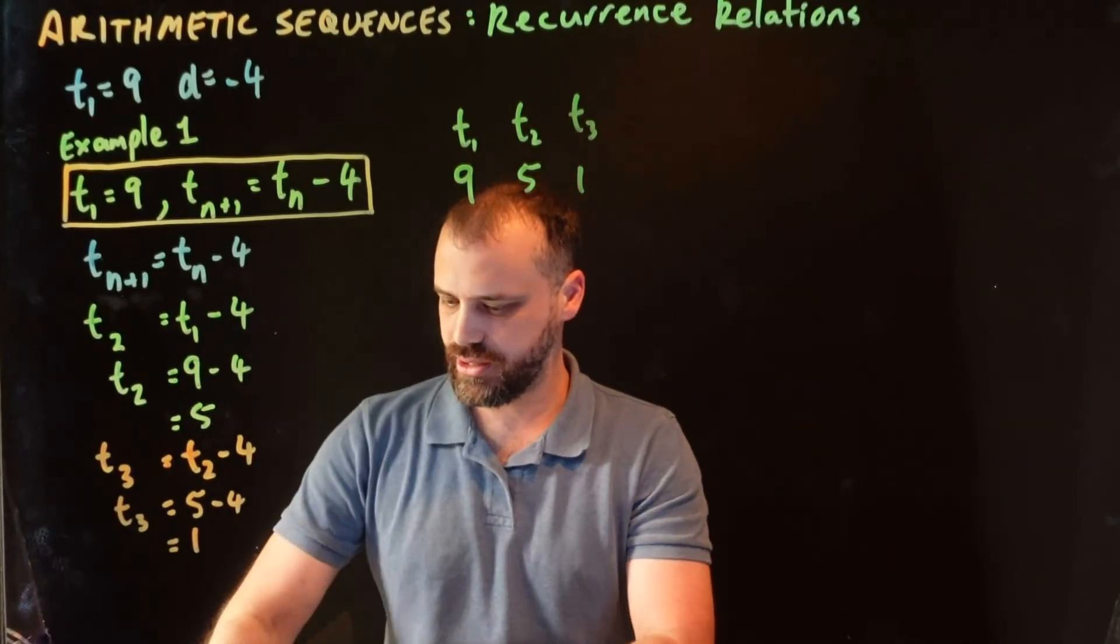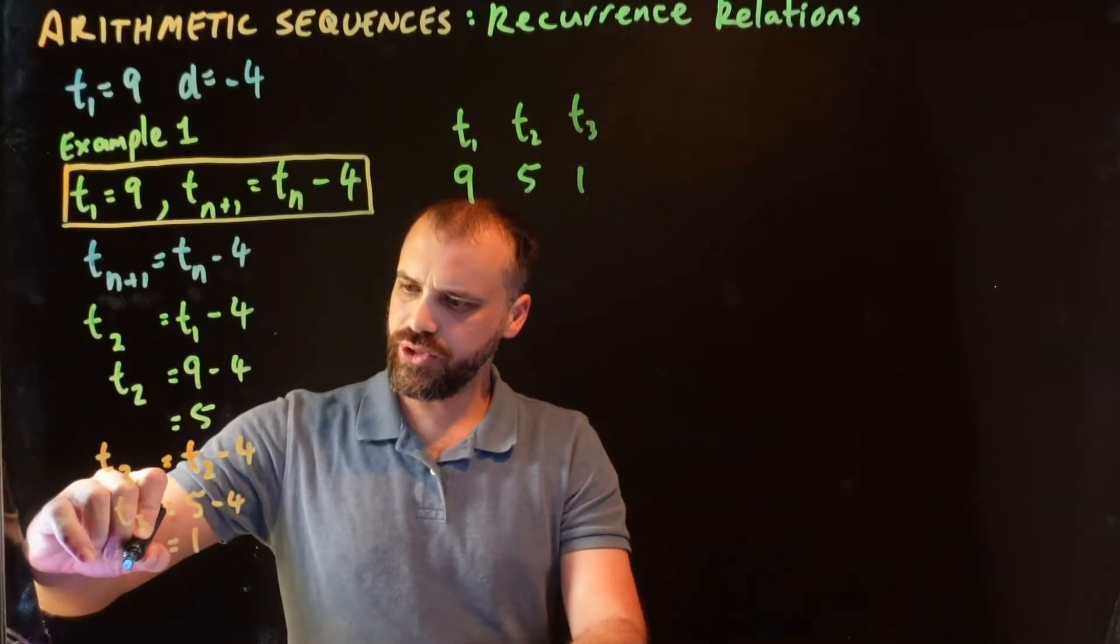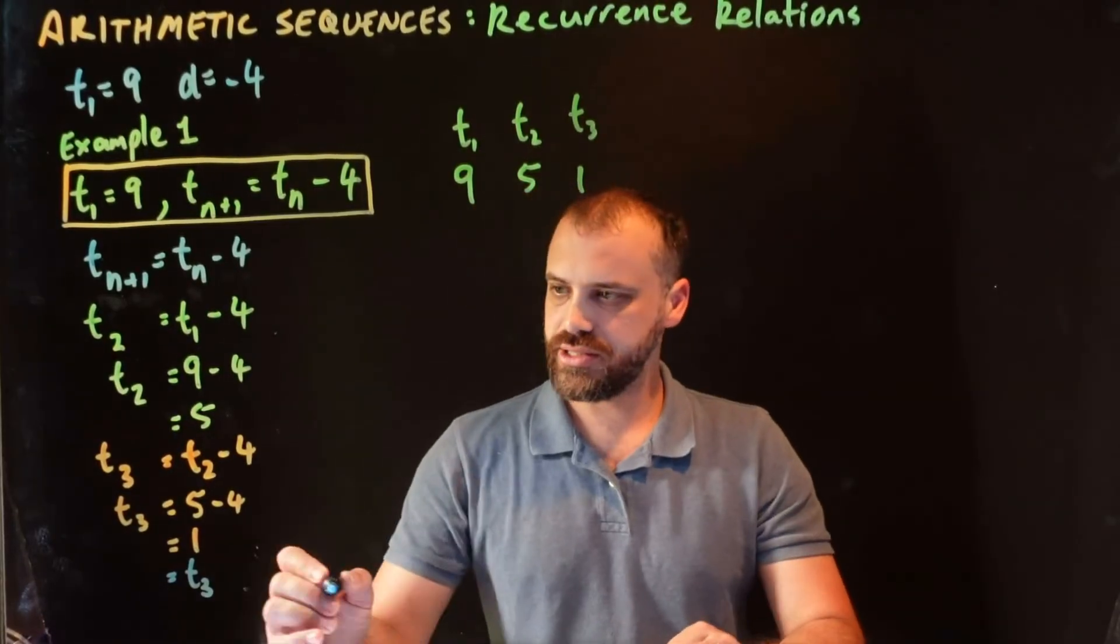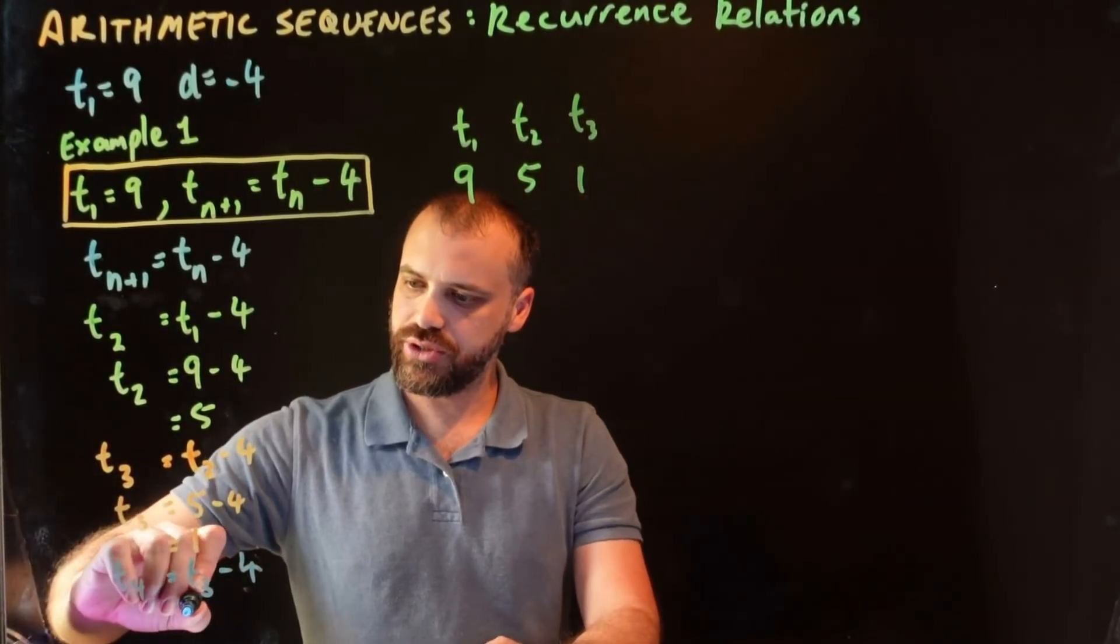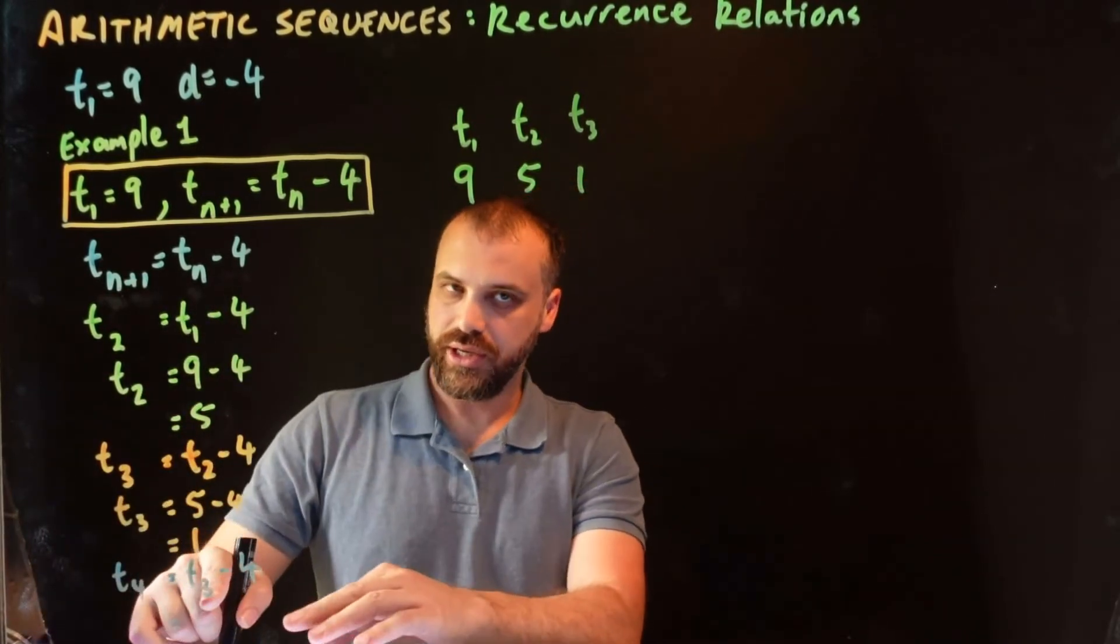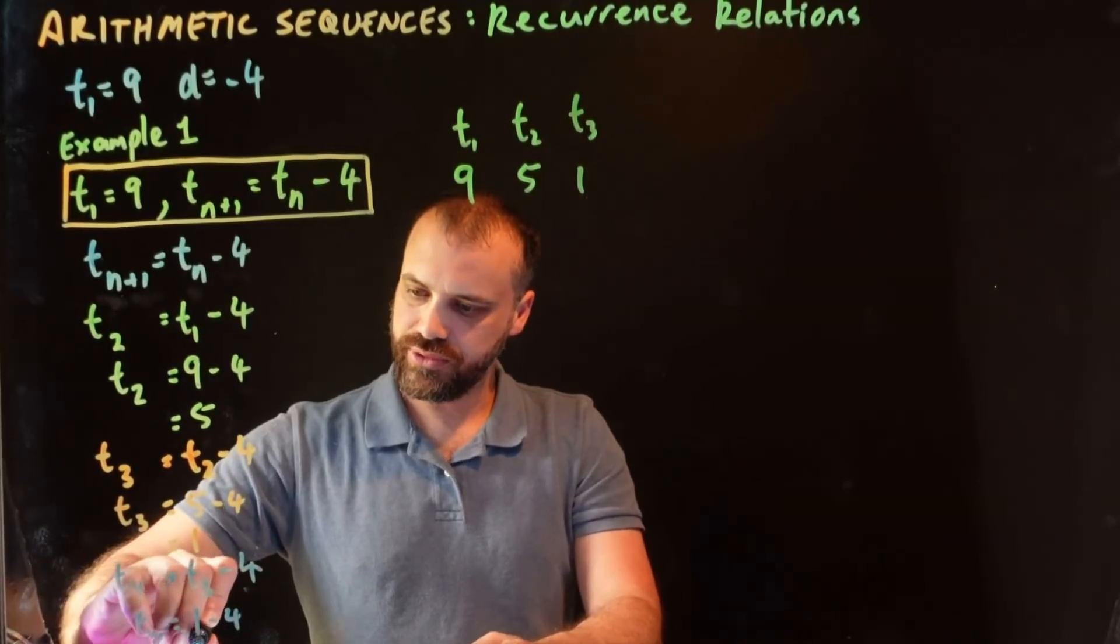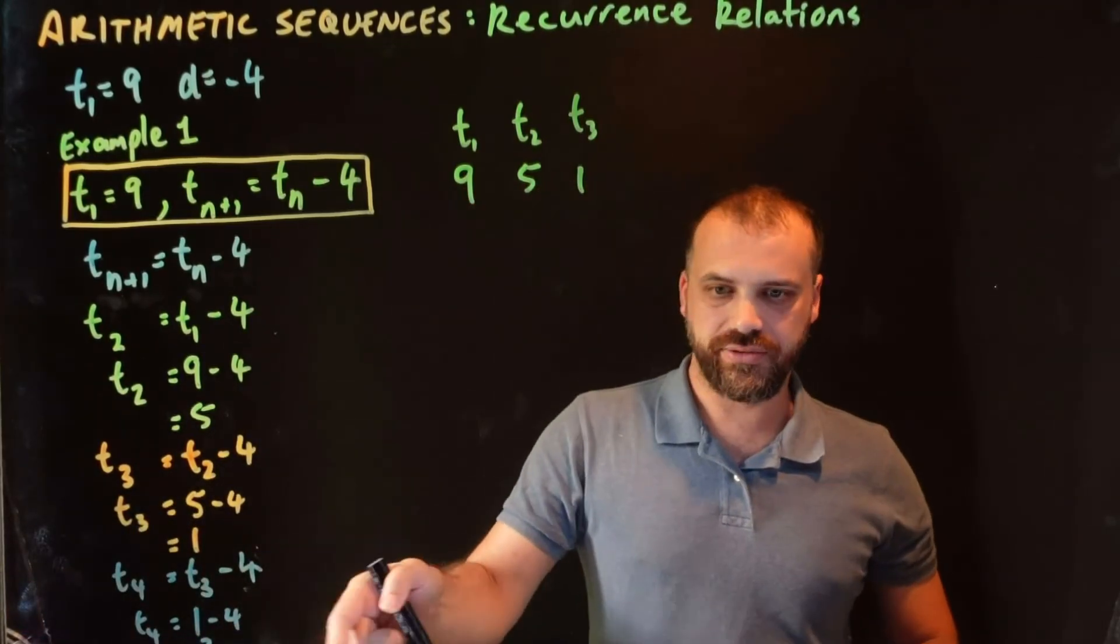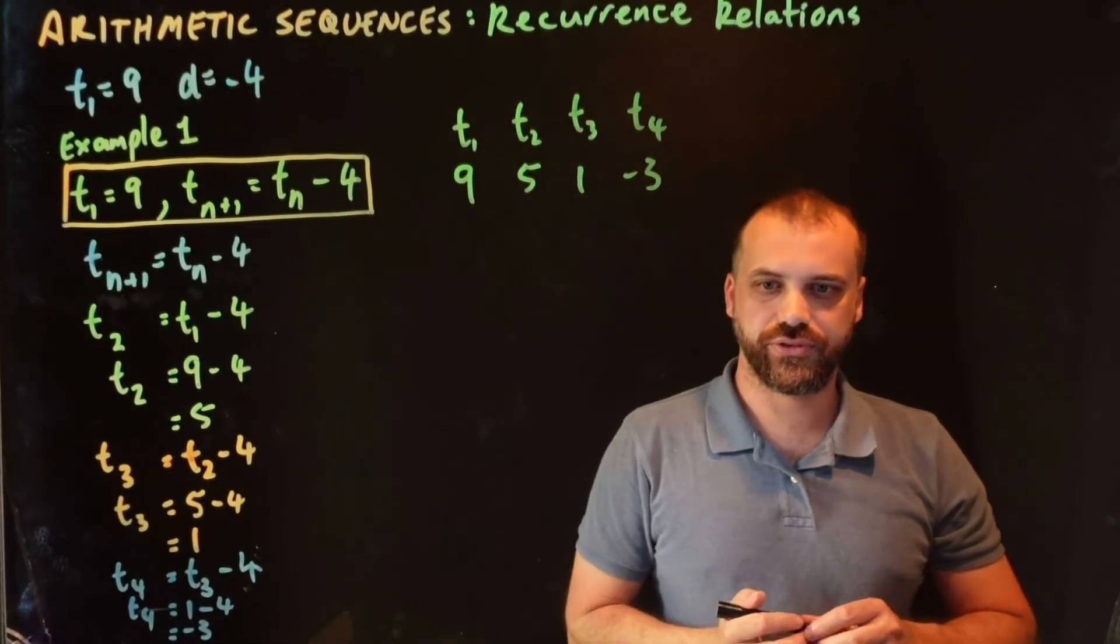All right, let's have one more go here. What if I wanted to know term 4? Well, if I want to know what term 4 is, I need to know what term 3 is, and then I subtract 4 from it, and that will give me term 4, term n+1, 1 more than term 3. Now, I know what term 3 is. Term 3 is 1. 1 minus 4. So, term 4 is negative 3. I hope you can see that. Negative 3. And I can write that on my list. Term 4 is equal to negative 3.